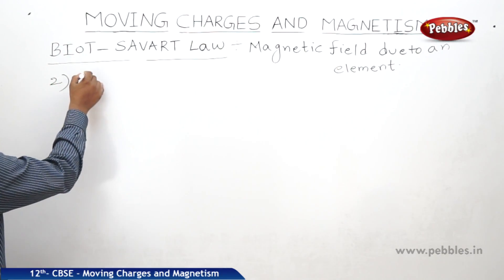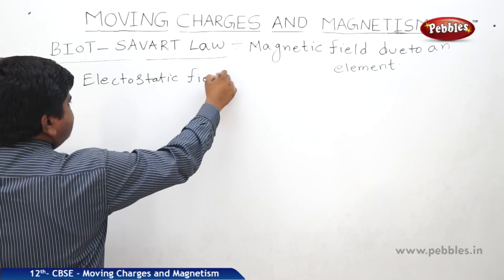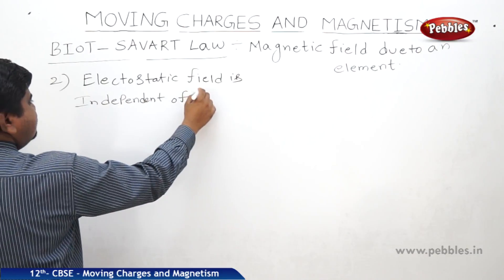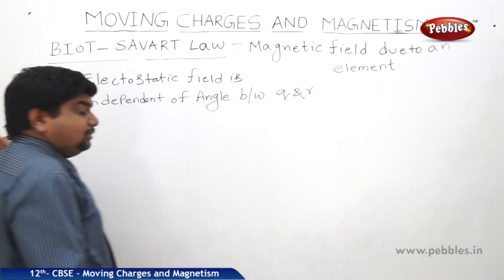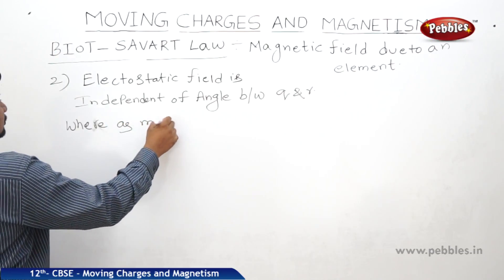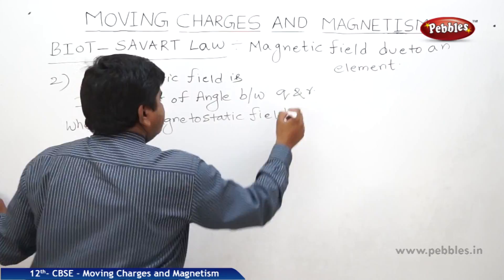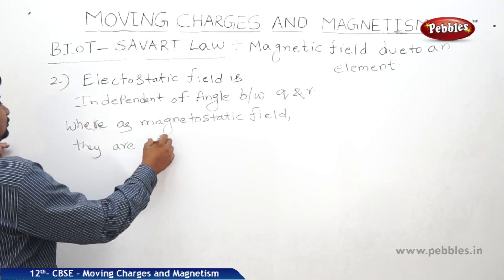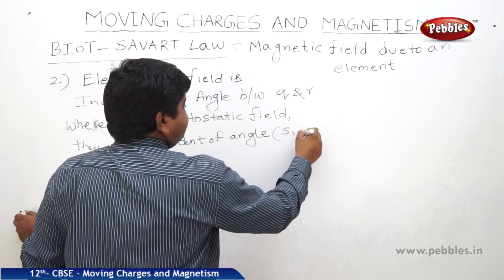So what is one more difference? Electrostatic field is independent of angle — independent of angle between Q and R. Whereas magnetostatic field is dependent on angle, sine theta. That is one more difference.